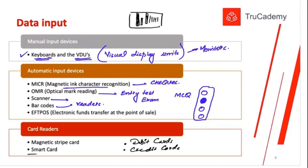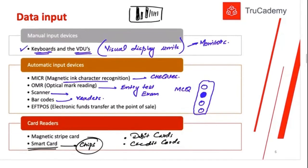Smart cards are different from debit or credit cards — they contain physical chips that hold all the information about the card holder. Our own ID cards in Pakistan, and identity cards in many countries, are smart cards that carry chips. Magnetic stripe cards hold a magnetic black line at the back, whereas smart cards hold a physical chip in the card.